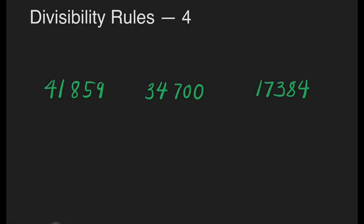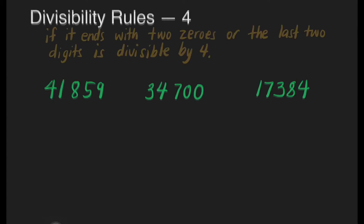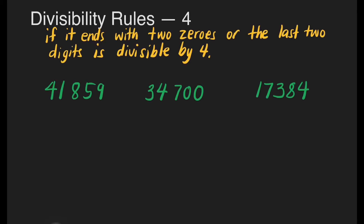Let us have divisibility rules for 4. Which of these 3 numbers is divisible by 4? A number is divisible by 4 if it ends with 2 zeros, or the last 2 digits is divisible by 4.